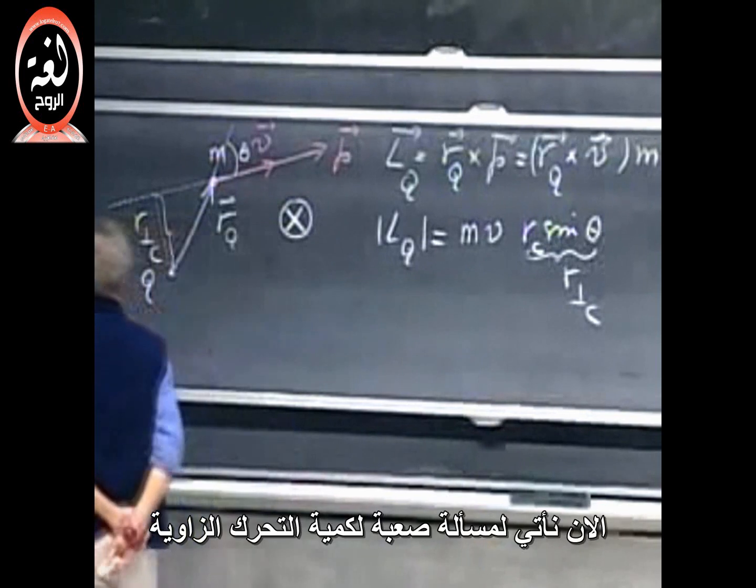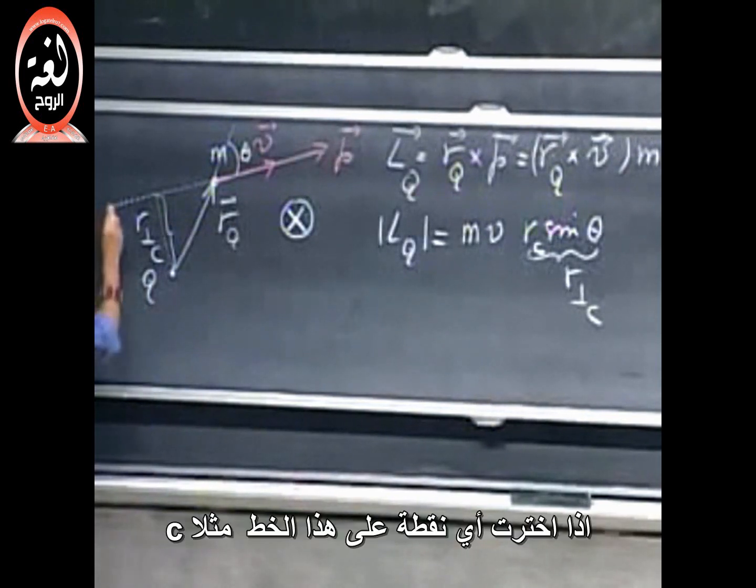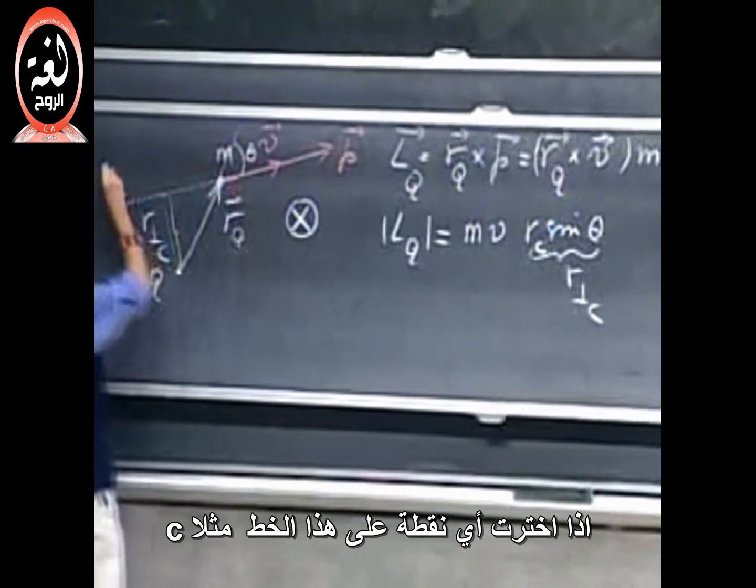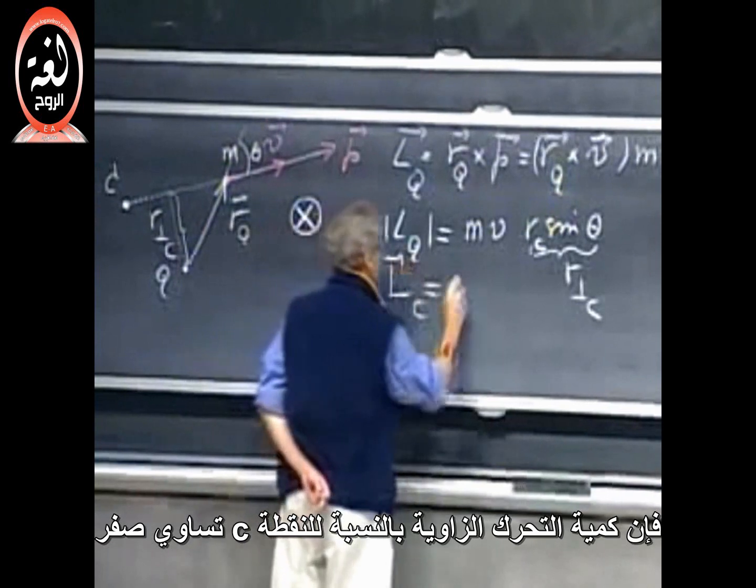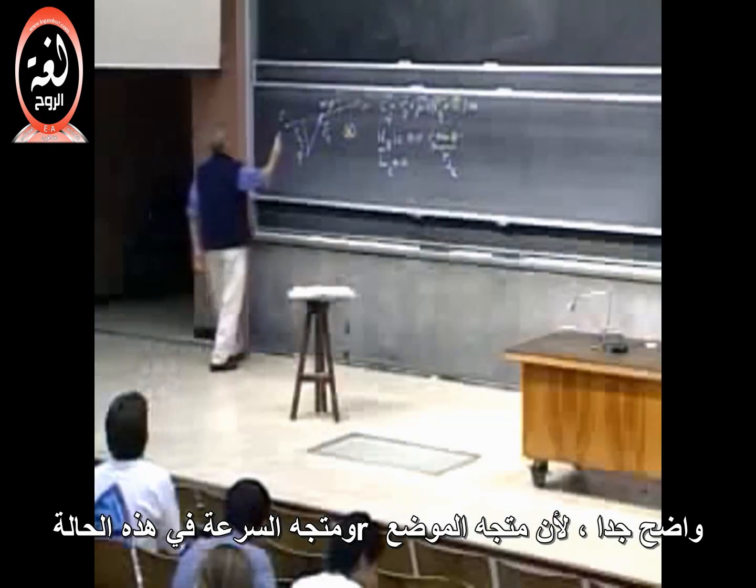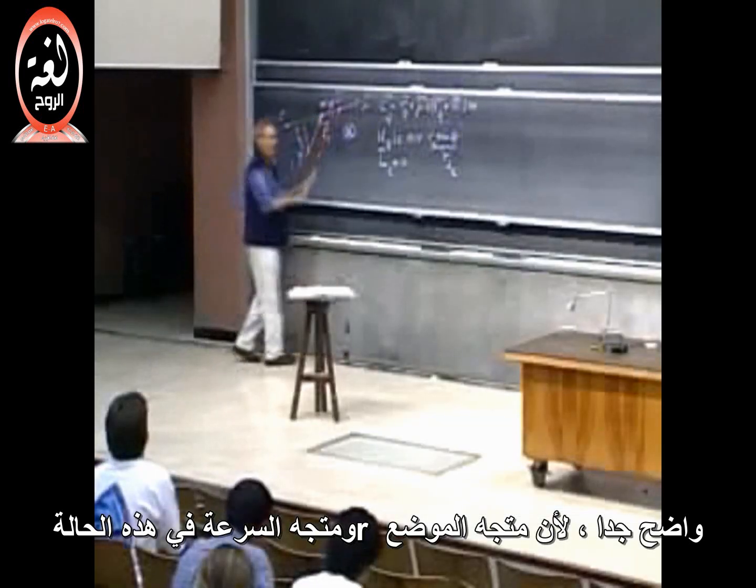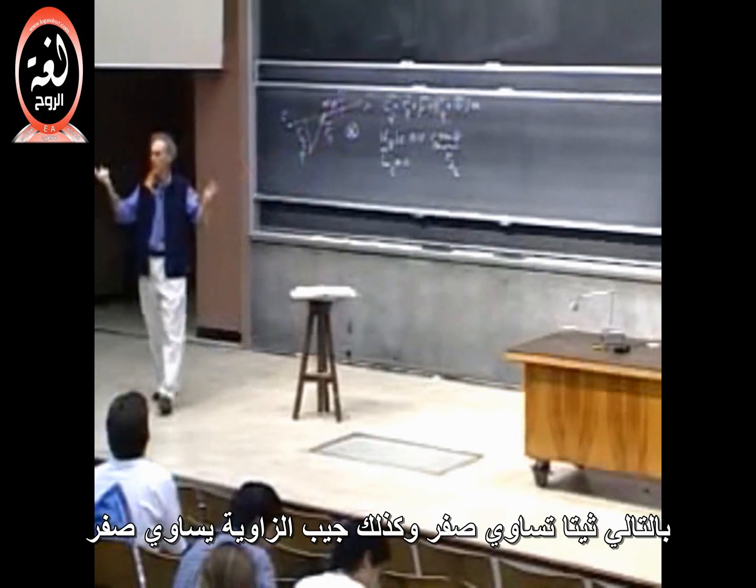Now comes the difficult problem with angular momentum. If I chose any point on this line, say point C, then the angular momentum relative to point C is zero. Very obvious, because the position vector R and the velocity vector, in this case, are in the same direction. So, theta is zero, so the sine of theta is zero.